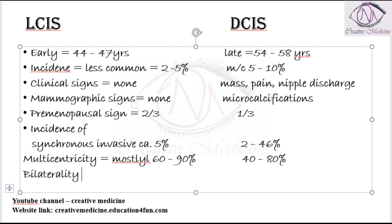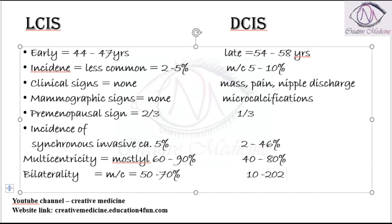Bilaterality. Lobular carcinoma in situ is most commonly bilateral, that is around 50 to 70 percent of cases are bilateral. Whereas in ductal carcinoma in situ, only 10 to 20 percent of cases are bilateral.